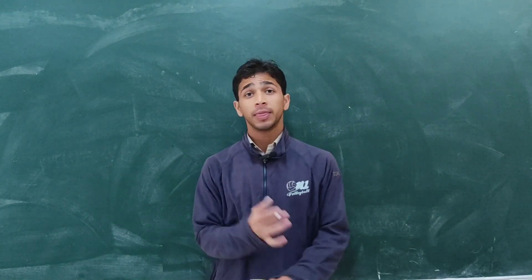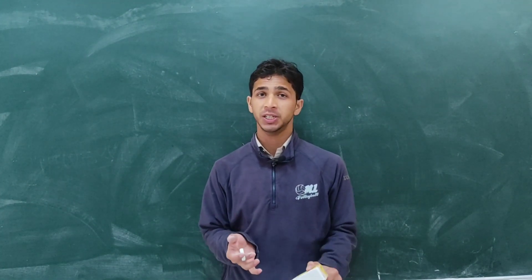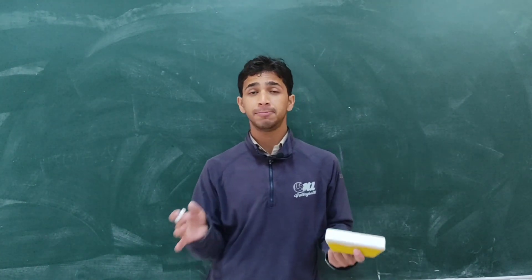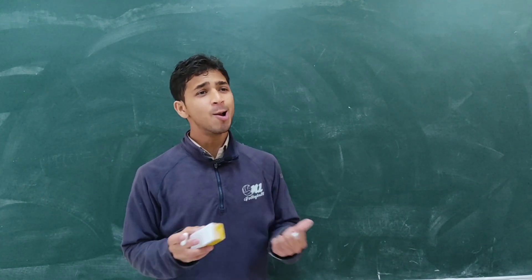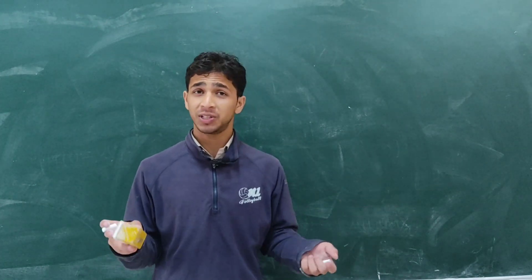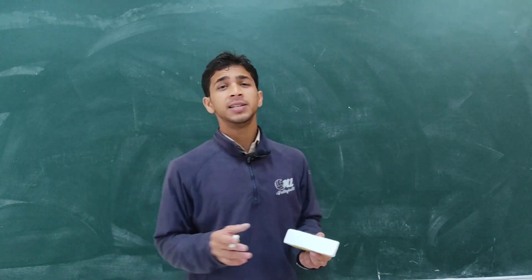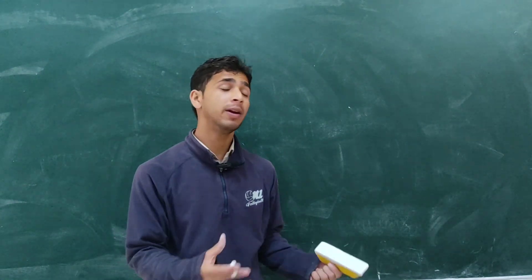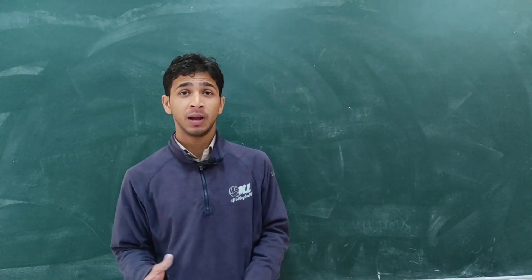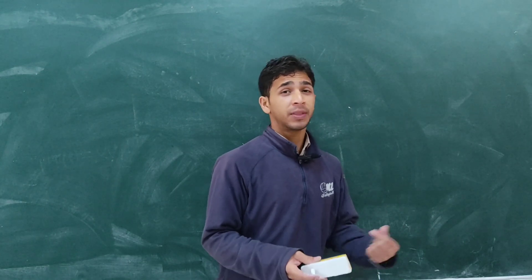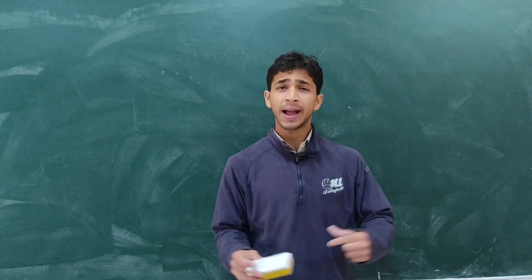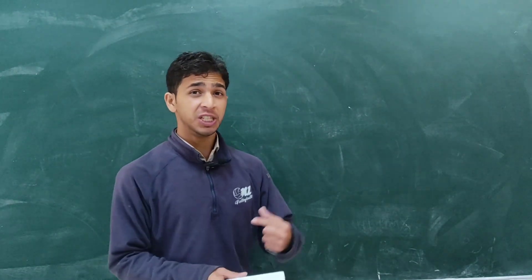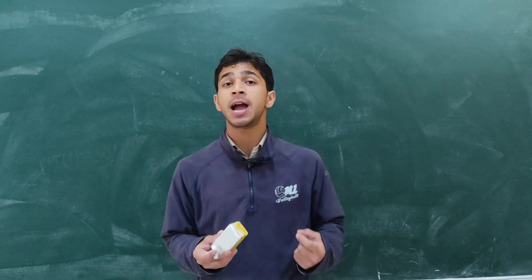In this lecture we will deduce the Heisenberg equation of motion, which governs systems in the Heisenberg picture. In quantum mechanics, pictures are different types of ways to solve a quantum mechanical problem. In our previous lecture, we saw the Schrödinger picture, where operators are time independent and the states which describe a quantum mechanical system are time dependent.